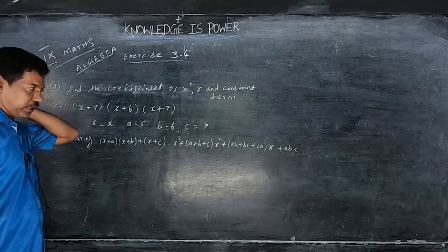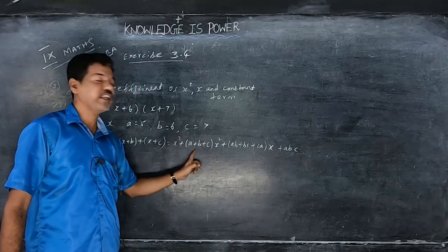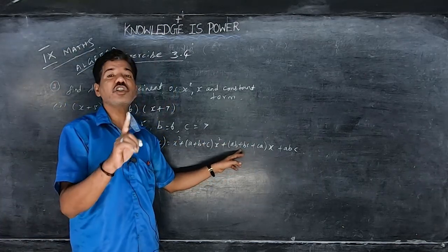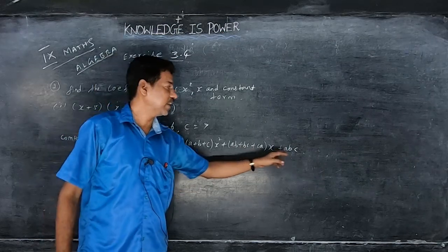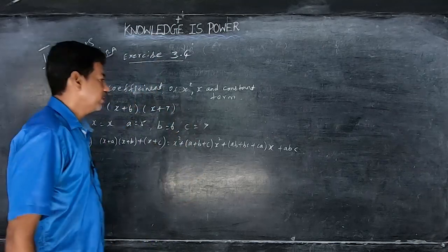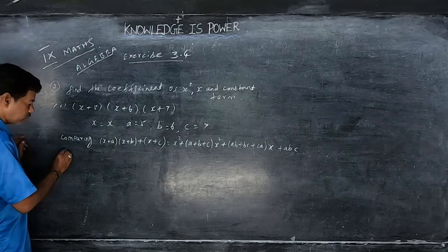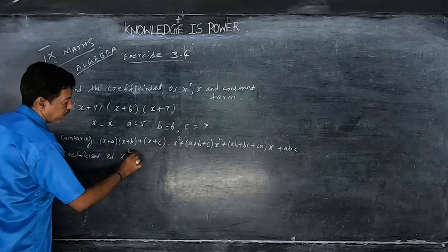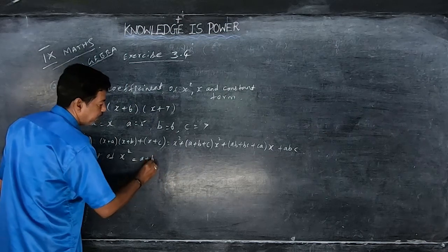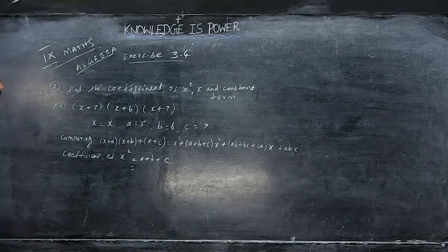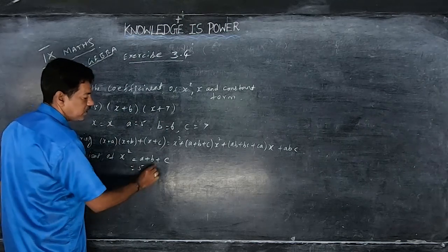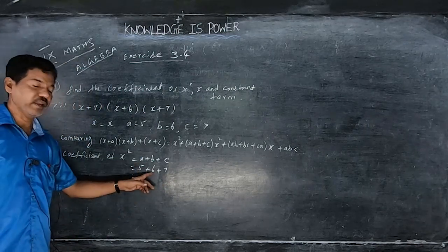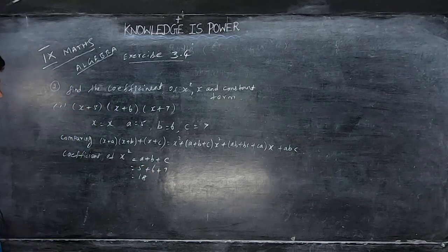Comparing with (x+a)(x+b)(x+c): here a=5, b=6, c=7. The formula expands to x cube plus (a+b+c)x square plus (ab+bc+ca)x plus abc. So the coefficient of x square is a+b+c = 5+6+7 = 18.